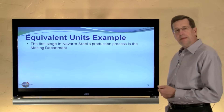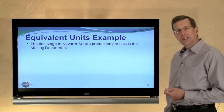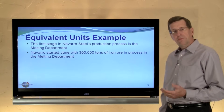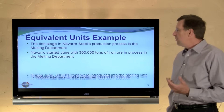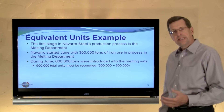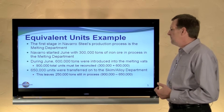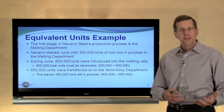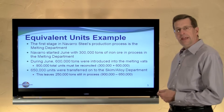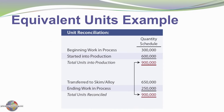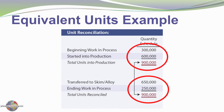The textbook has an example for Navarro Steel, and I'm simply following along with that illustration. The first stage in Navarro's production process is the melting department. Navarro started the month with 300,000 tons of ore in process. During the month, they added an additional 600,000 tons into process, giving 900,000 total units that must be reconciled or accounted for. 650,000 tons were transferred on to the next department, leaving 250,000 in process at the end. This unit reconciliation is the beginning point to get our arms around the total units involved in a particular process during a particular period — 900,000 in, 650,000 transferred out, 250,000 still in process.